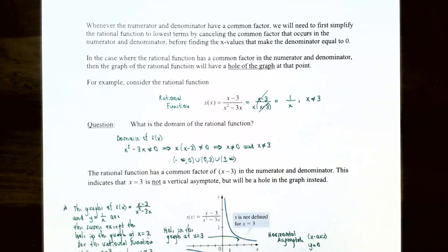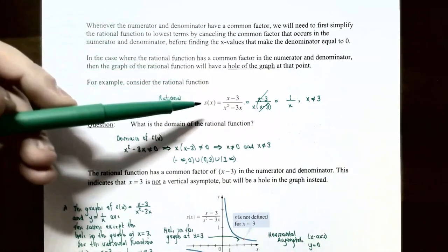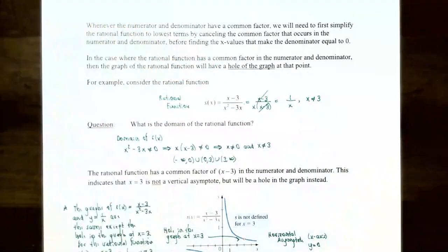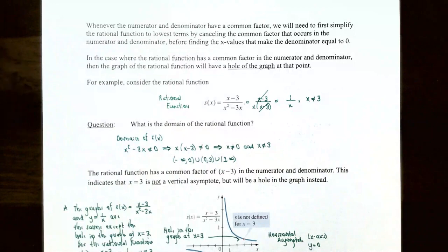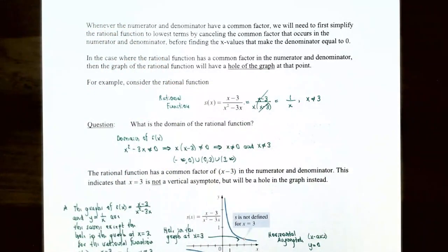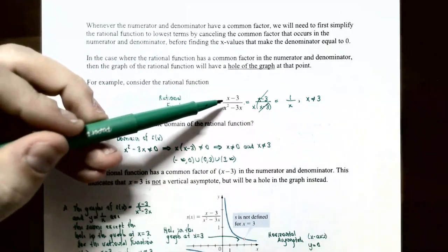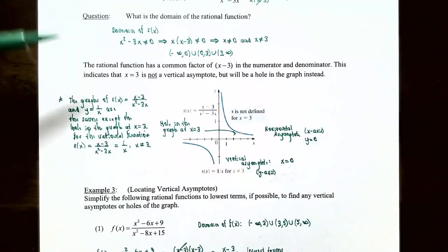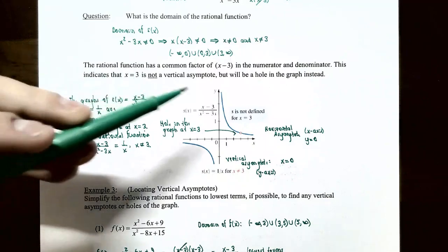Notice the difference between simplifying the rational function and the domain. The original function s(x) has domain excluding both 0 and 3. The simplified function 1 divided by x only excludes 0, so it is not the same as s(x) — they are not the same function. Even though s(x) simplifies to 1 divided by x, x still cannot equal 3, because substituting x equals 3 into the original function gives 0 divided by 0, which is undefined.